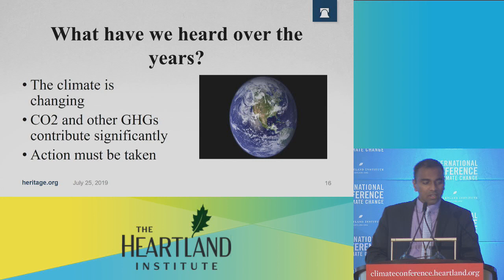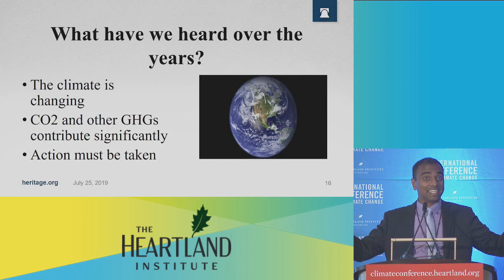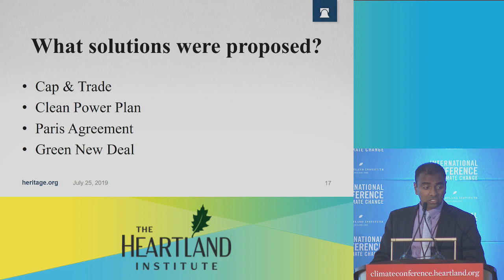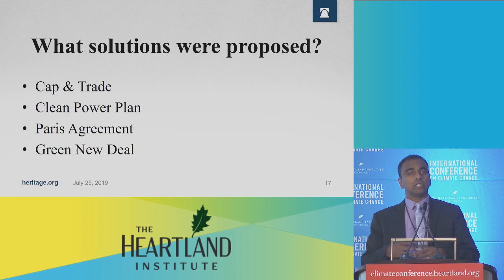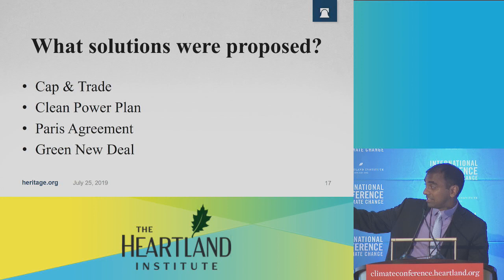So what have we heard over the years? We've heard that the climate is changing, that CO2 and other greenhouse gases contribute significantly to this change, and that action must be taken. So what so-called solutions have been proposed? Cap and trade has been popular in the past — the late Senator John McCain and his colleague Joe Lieberman suggested something along these lines about 20 years ago. More recently, Waxman and Markey suggested a cap and trade bill around 2009. Subsequently, the Obama administration issued the Clean Power Plan, a directive to limit CO2 emissions. Even more recently, there was the Paris Agreement, which President Trump recently pulled us out of. And most recently, there has been the Green New Deal.